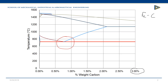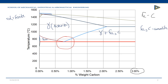This is an austenite and ferrite region. And here we're getting austenite and cementite. Over here, in this small area, we would only have ferrite. And in the bottom region, we're going to get ferrite and cementite.